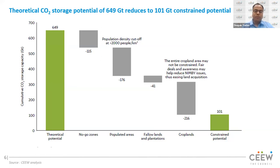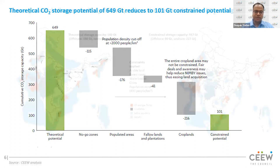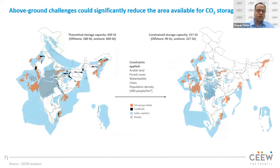This is not insignificant considering that total annual emissions from India are just about 3 gigatons. There are two extremities: the left shows the total theoretical CO2 sequestration potential, and the right shows the total constrained potential. The realistic CO2 sequestration potential will be somewhere in between these two extremities.